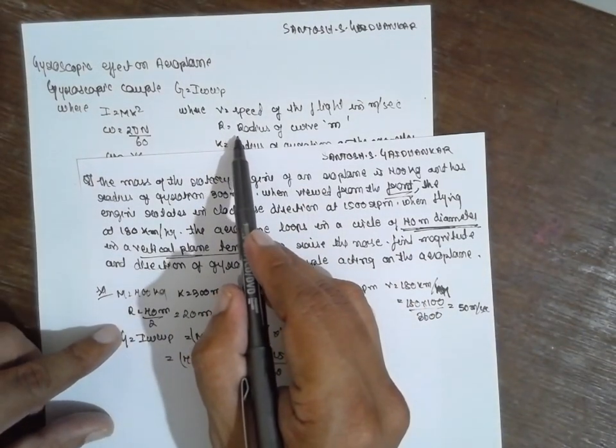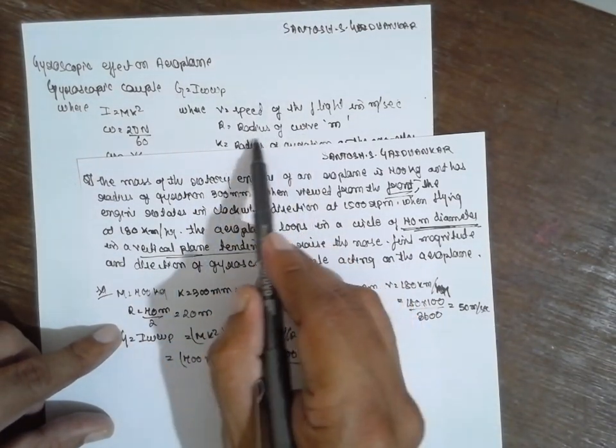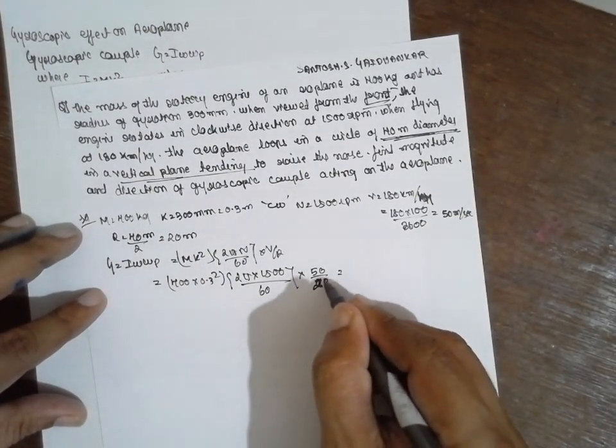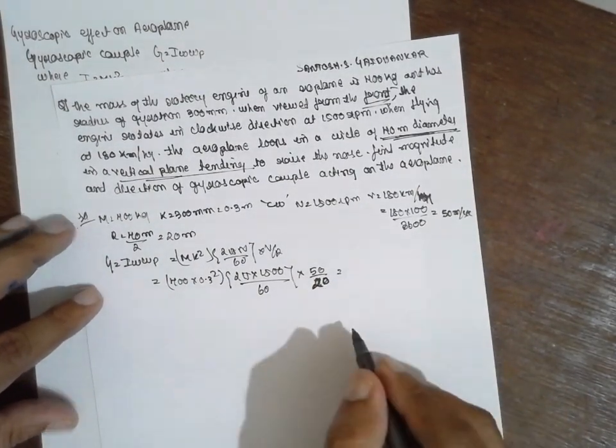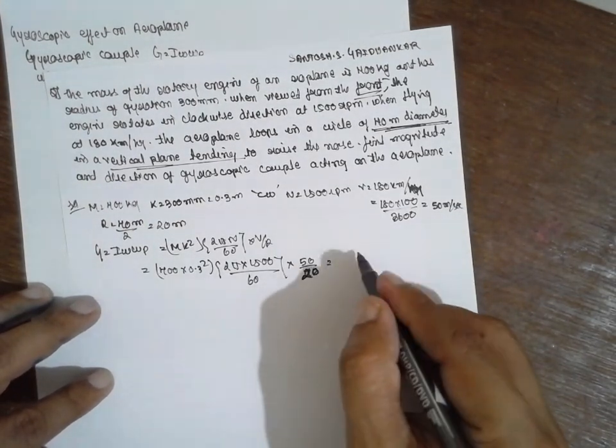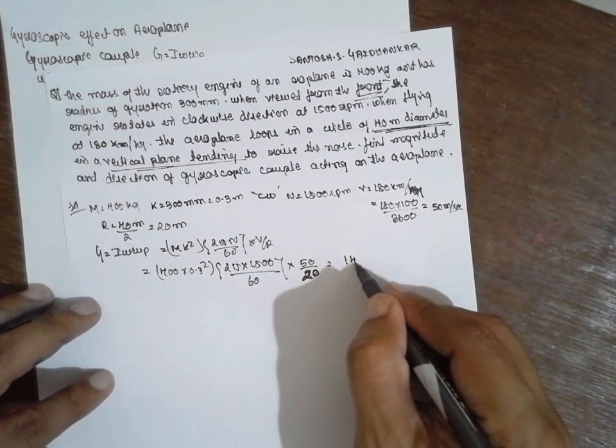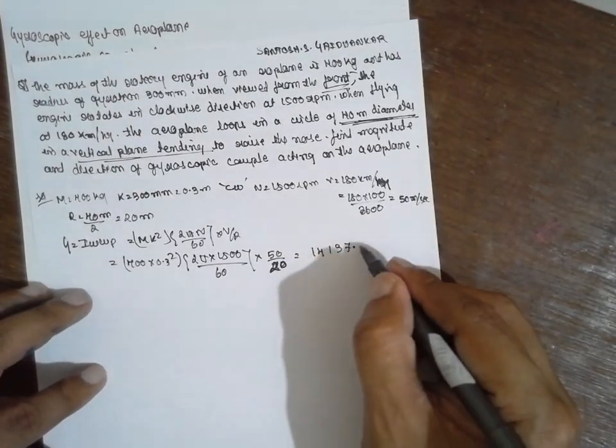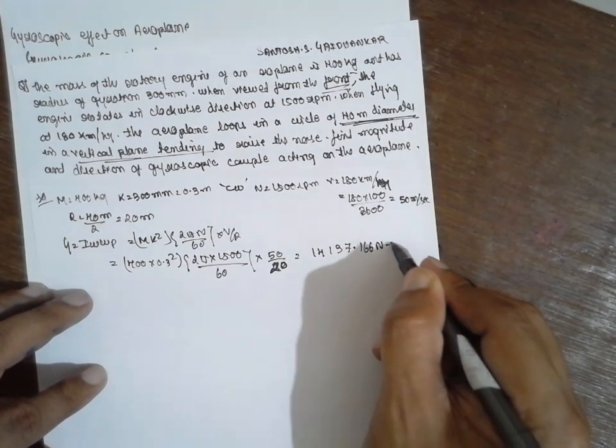R is nothing but radius of curvature. It should be radius. You have to write 40 divided by 2. It should be 20 here. If we calculate the value we will obtain 14137.166 Newton meter.